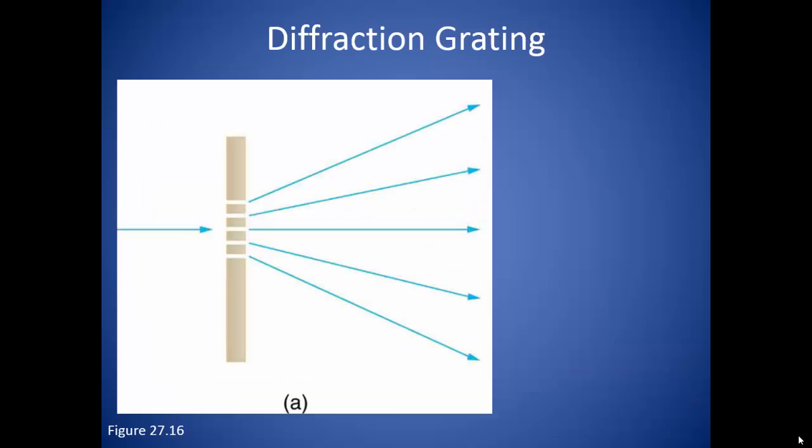We can also set up a system where there are more than two slits. Anytime we have a series of parallel slits, we call it a diffraction grating.